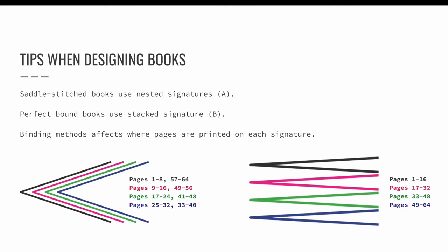The way your project binds can affect the order the pages are printed. Saddle stitching nests printed signatures, meaning eight pages of each 16 page signature land on the front half of the book and eight pages land on the back half. Perfect binding uses stacked printed signatures. Pages 1–16 are in the first signature, pages 17–32 are in the second, and so on. What is important to know right now is that fold-out panels need to land between signatures. In the perfect bound example, we could insert a fold-out panel at the front or back of the book, or between pages 16 and 17, between pages 32 and 33, or between pages 48 and 49.